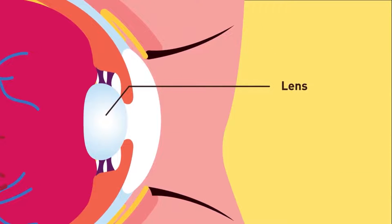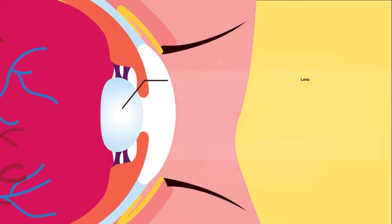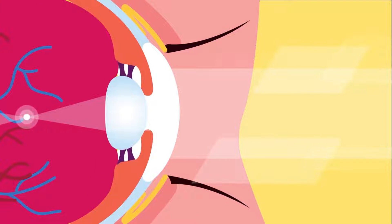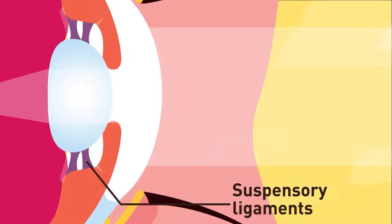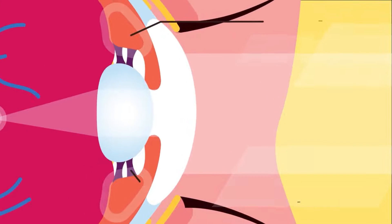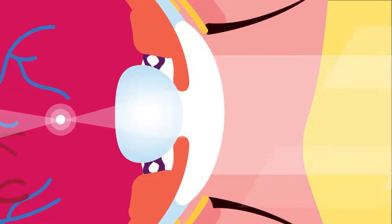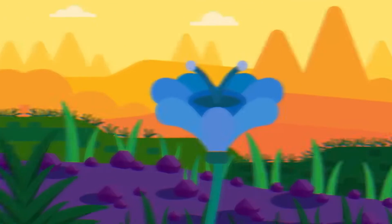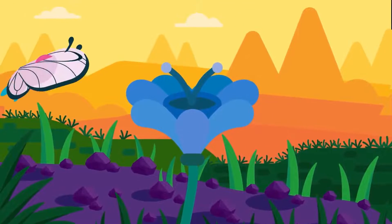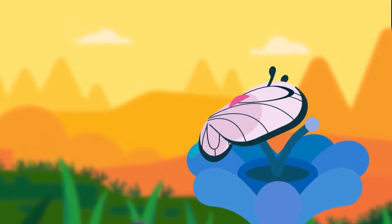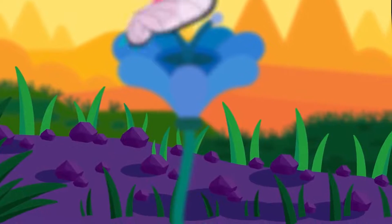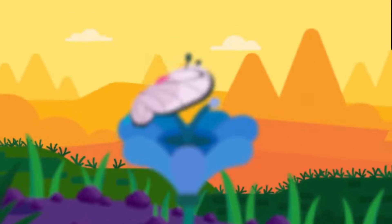The lens is soft, transparent and elastic in nature. It helps to focus light onto the retina. Suspensory ligaments hold the lens in place. The ciliary body is a muscle that is able to contract and relax, and this contraction adjusts the focus strength of the lens when seeing near or distant objects.